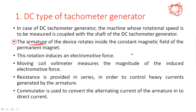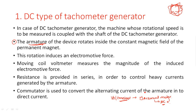A commutator is used to convert the alternating current of the armature into direct current. The D'Arsonval meter — used in voltmeters — works only with DC current, not AC. Since the armature movement generates AC, that alternating current must be converted to DC for the voltmeter to work. Therefore, a commutator is used in the DC type tachometer to convert AC to DC, so the armature output voltage can be measured by the voltmeter.